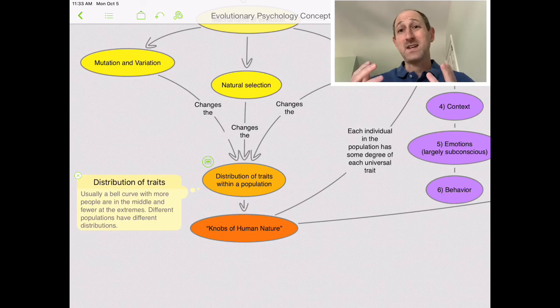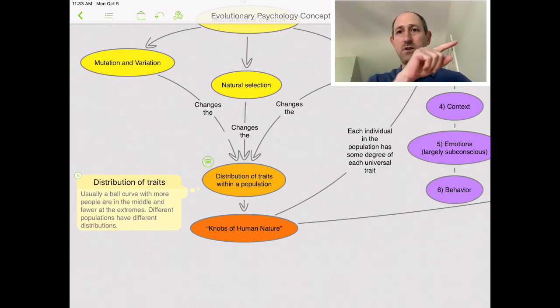The other thing to keep in mind is that different populations can have different distributions. We know that the Dutch are taller than the Japanese. So, the Dutch curve, the whole curve, is going to be shifted towards taller rather than the Japanese curve, which would be shifted towards the shorter.